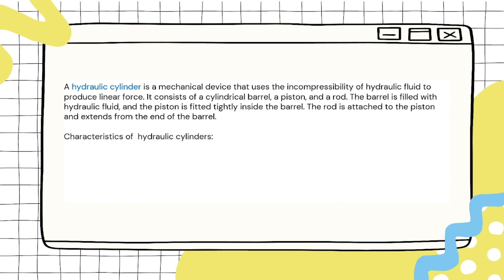Characteristics of hydraulic cylinders. Number one, linear actuation: hydraulic cylinders produce linear force, which means that they can push or pull objects in a straight line. Number two, power: hydraulic cylinders can generate a significant amount of force even with a small bore size.